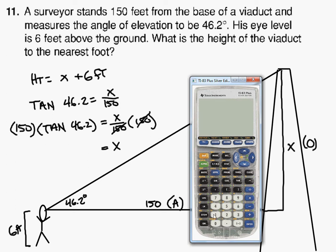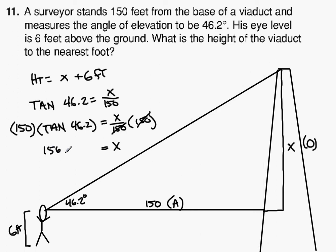And now we'll type in 150 times tangent 46.2 degrees. Enter. 156.42 feet. So 156.42 feet is x.